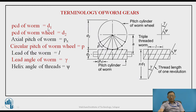The pitch circle diameter of the worm is referred to as D1, and the pitch circle diameter of the worm wheel is shown as D2. The axial pitch for the worm thread is shown as Px, and the circular pitch for the teeth on the worm wheel is shown as P.